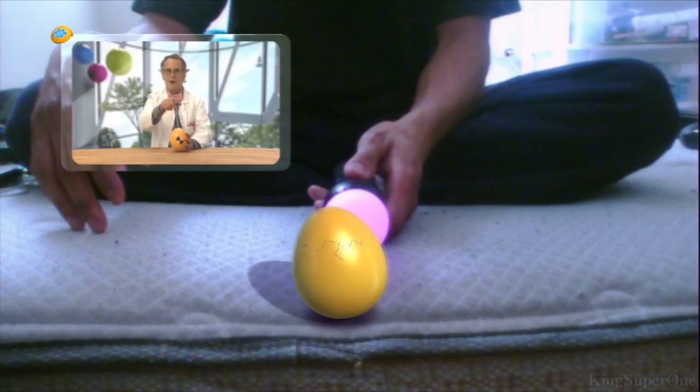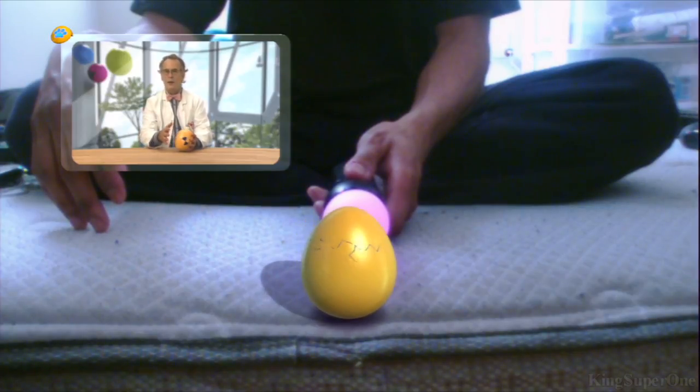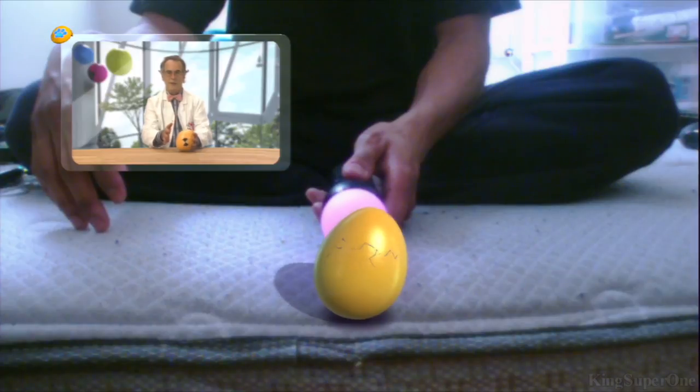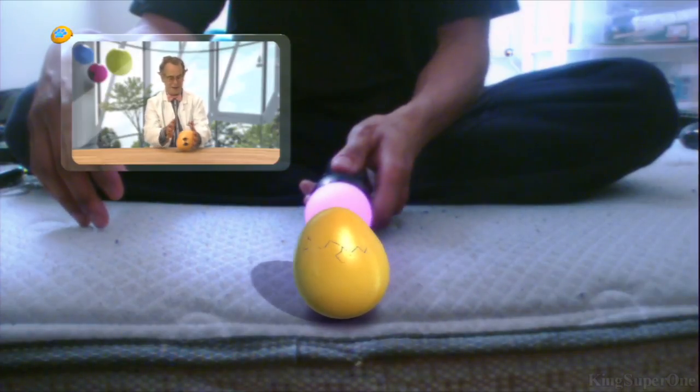Great! There's a small crack appearing. Let's give your new friend some more encouragement to come out of the shell. Give the egg a little push on one side, and then push the other side to get it rocking. Like this.